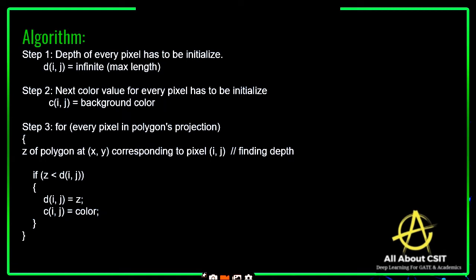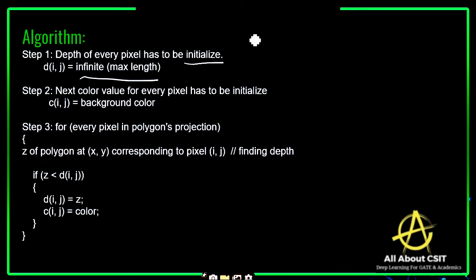Each surface is processed separately, one pixel position at a time. The Z buffer is efficiently applied on surface polygons. First, the depth of every pixel has to be initialized — you initialize the depth of every pixel to infinite, the maximum value.